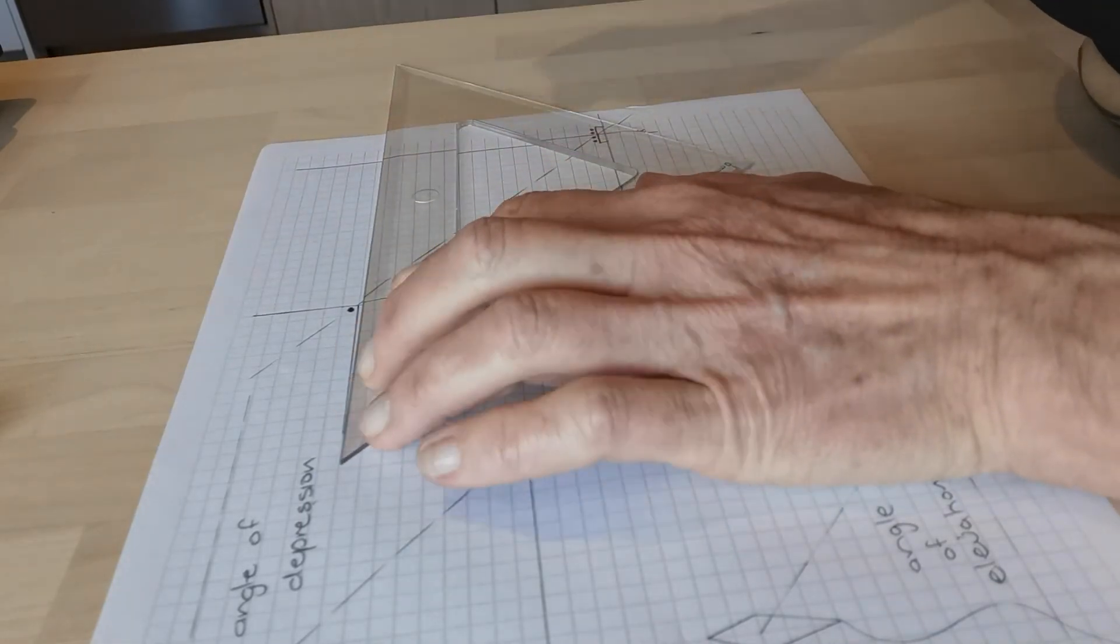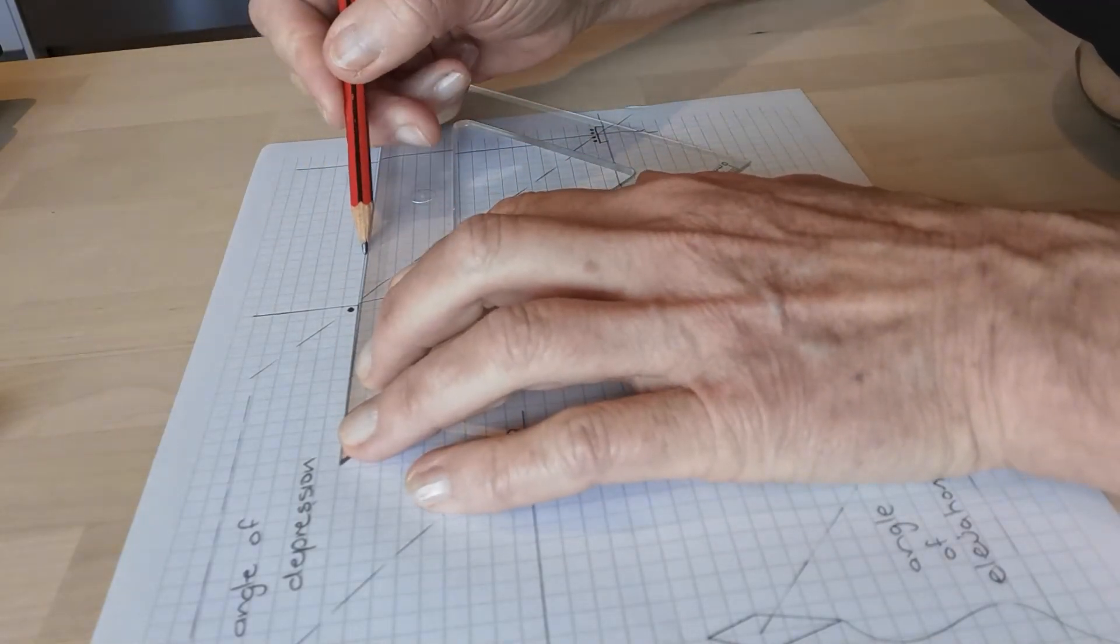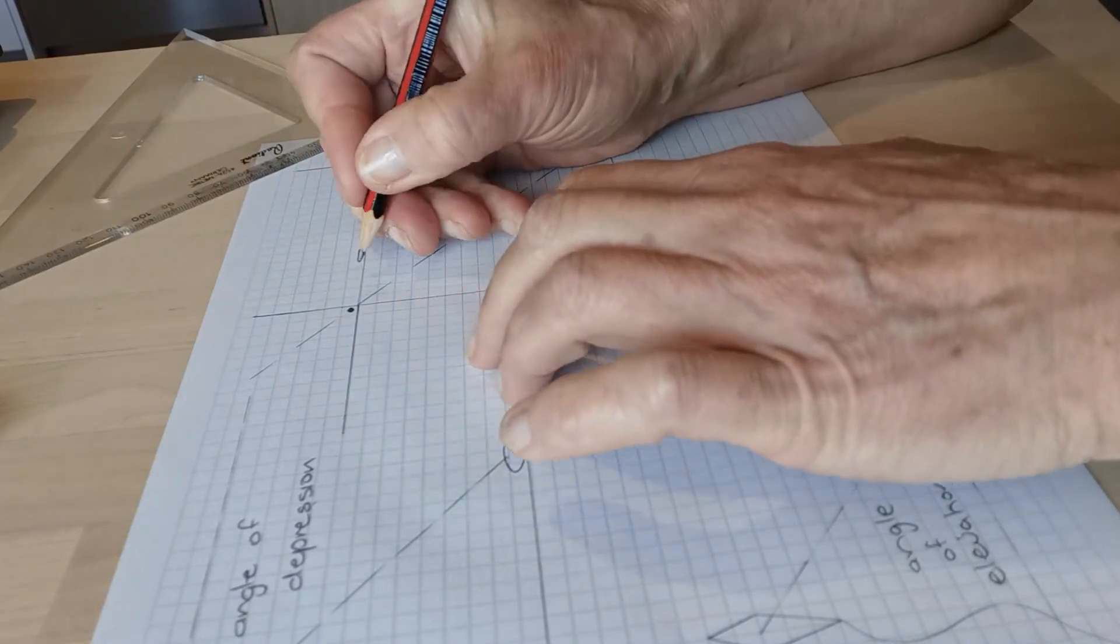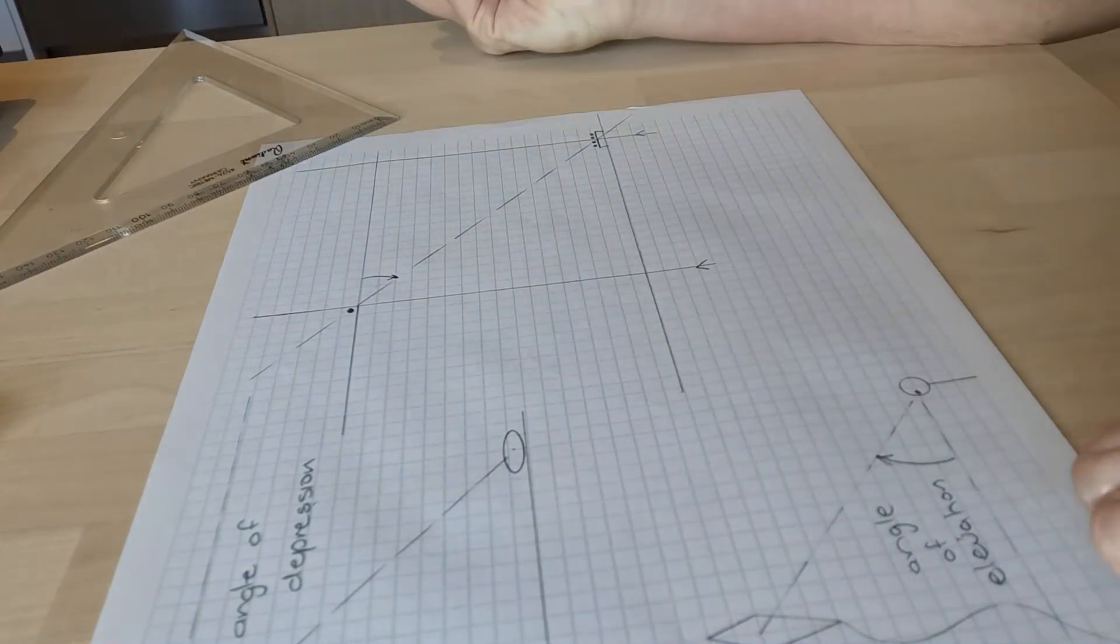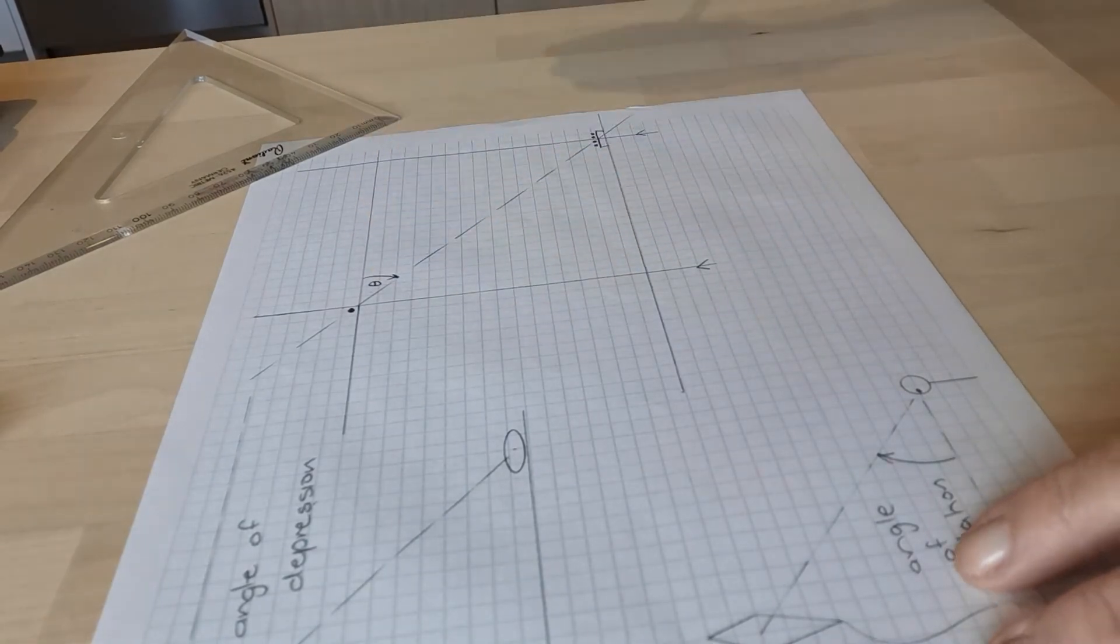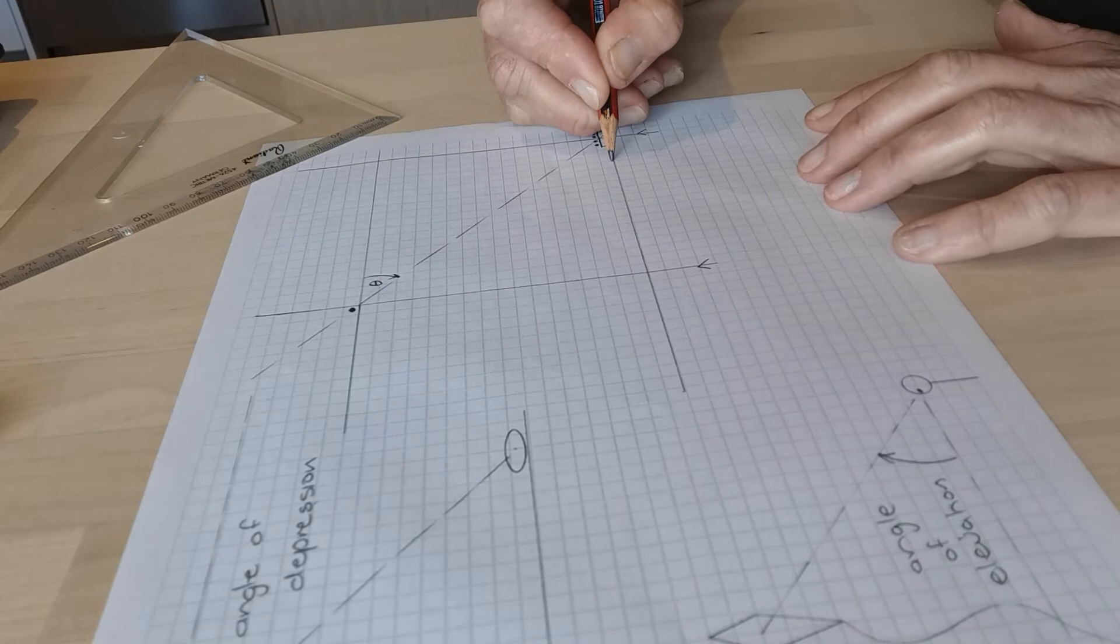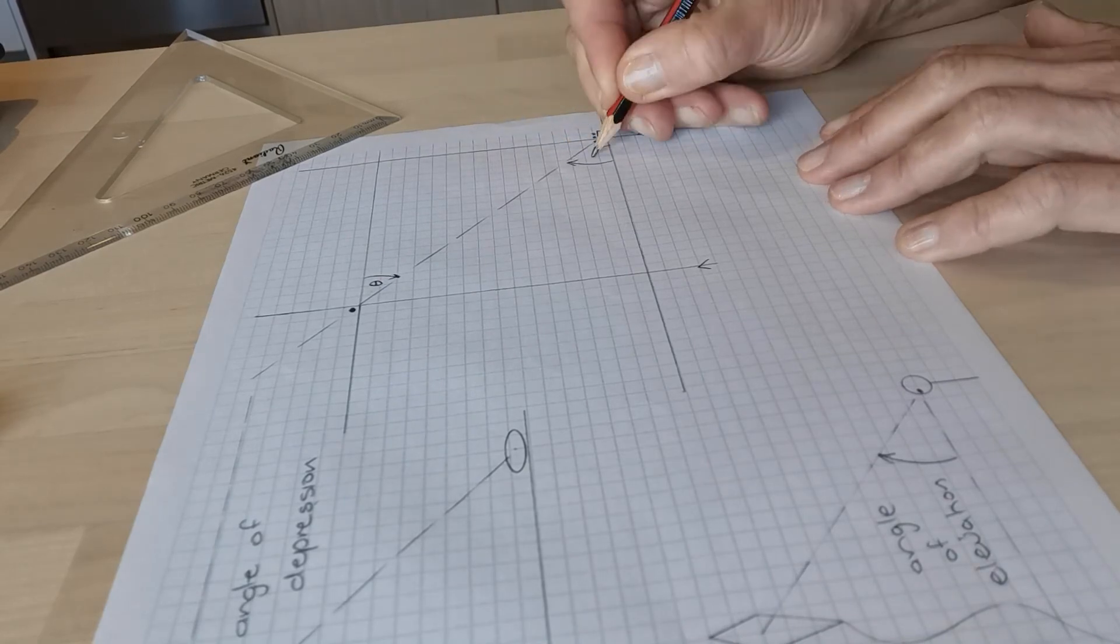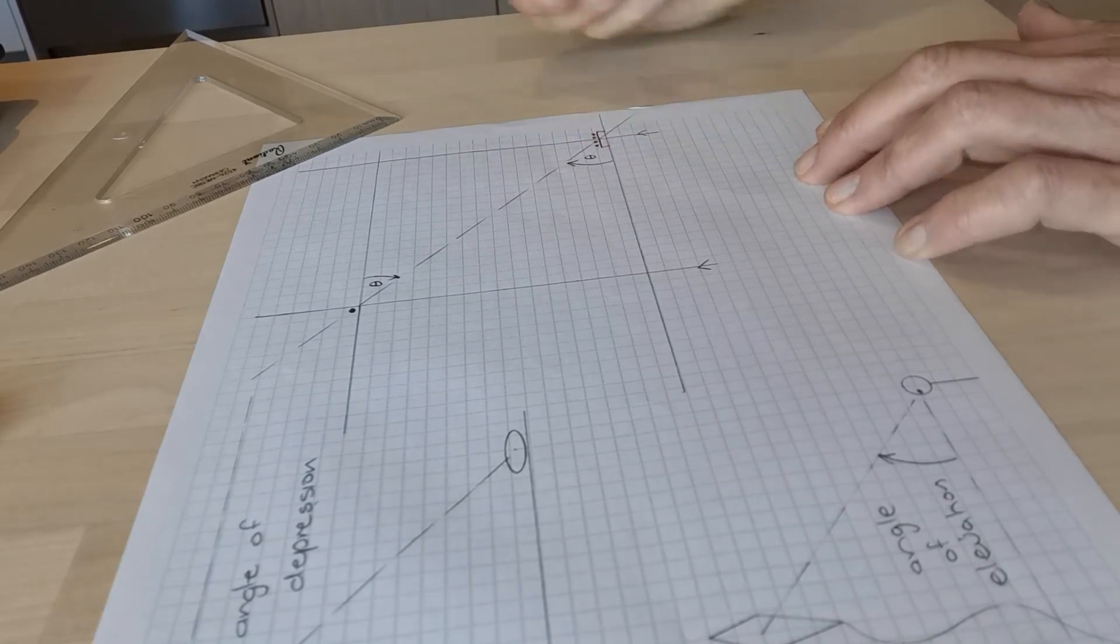So let's have a look at the angle of depression. Here it is down here. So that's an angle of depression, theta. And at the same time these people are looking up at you and that's an angle of elevation.